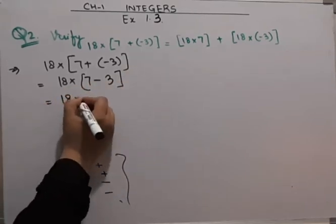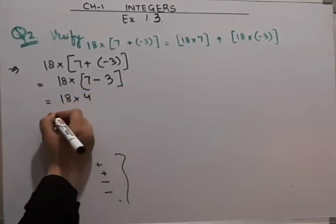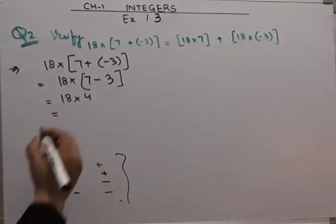So this will be 18 into 7 minus 3 is 4. 18 into 4 is 72.